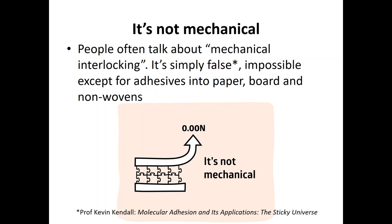The first thing: adhesion is not mechanical. People often talk about mechanical interlocking, imagining that two surfaces are stuck together like little jigsaw pieces. This notion is simply false. Don't believe me — believe Professor Kevin Kendall, one of the true greats in adhesion science in his wonderful book Molecular Adhesion. It's not just zero, it's impossible. Except for adhesives into paper, board, and nonwovens where the adhesive can wrap around threads. But for generalized adhesion, there is no mechanical interlocking — zero.